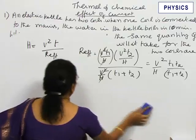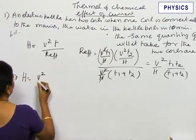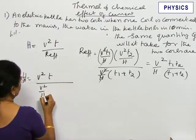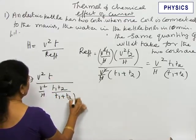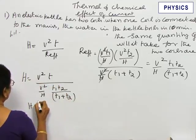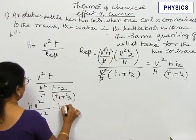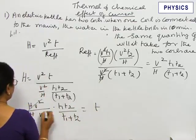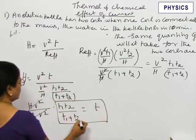Now let us substitute it in the previous equation. So H is equal to V square T divided by V square by H into T1 T2 by T1 plus T2. This cancels and so T is equal to T1 T2 by T1 plus T2.